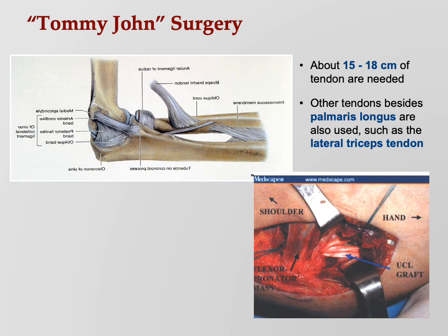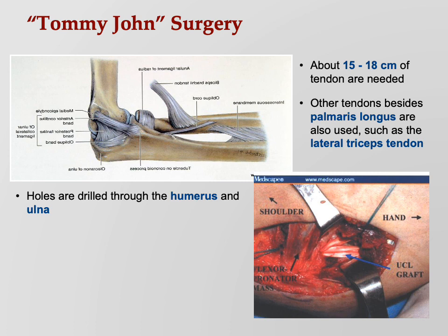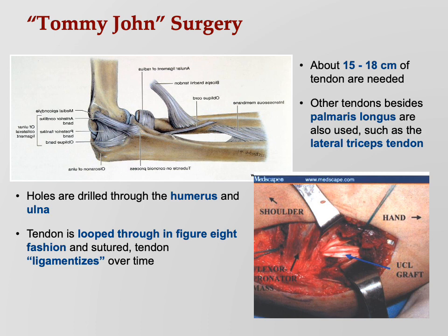They also sometimes use the lateral triceps tendon. The procedure involves drilling a hole through the humerus and the ulna — through the medial epicondyle of the humerus and through the coronoid process of the ulna. Then they take the harvested tendon and loop it through the holes, figure-eighting it — wrapping it around and through in a figure-eight fashion — and then sew it up. You can see an actual Tommy John surgery in progress in the lower right, where you can see the tendon sewn in.